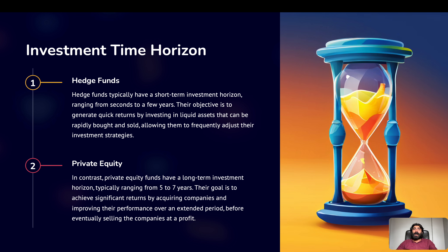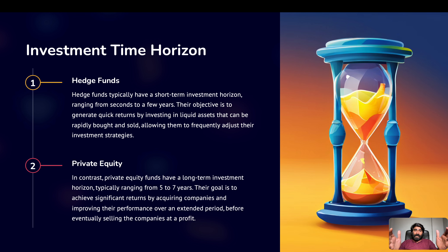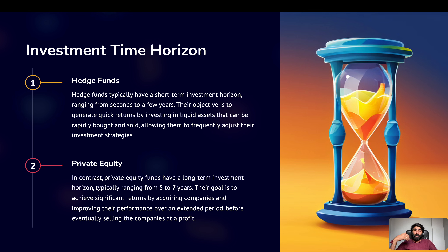The first key difference between hedge funds and private equity is the investment time horizon. Hedge funds typically have a short-term investment horizon ranging from seconds to a few years. This means hedge fund investments should be in liquid assets — it could be equities, bonds, debentures, or even derivatives — because fund managers can quickly buy and sell them.